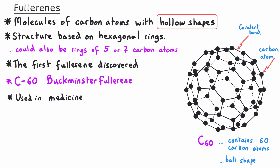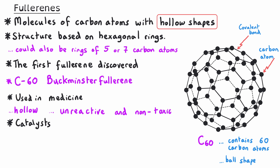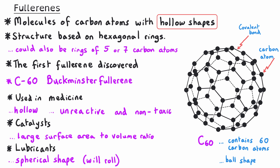First, fullerenes are used in medicine for drug delivery. Because they are hollow, they can act as a cage and trap a drug inside as they move around the body. In addition, these fullerenes are unreactive and non-toxic, so they won't cause harm. Another use is as catalysts: they have a very large surface area to volume ratio, so you don't need large quantities to provide a large surface area. Finally, this type of fullerene is useful as a lubricant, because their spherical shape means they roll around and reduce friction.